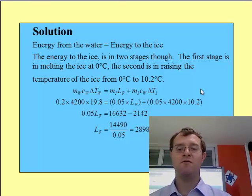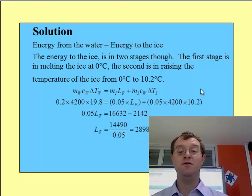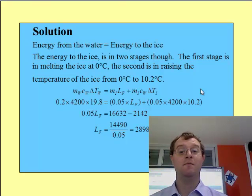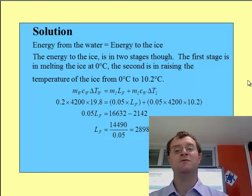If we work this calculation through and rearrange for the latent heat of fusion, it gives us a value of 289,800 joules per kilogram. That's how we go through that calculation.